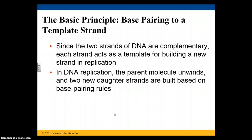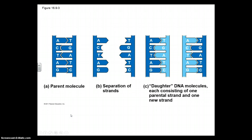Since the two strands of DNA are complementary, each strand can act as a template for building a new strand when the DNA is replicating. The parent molecule will unwind, and two new daughter strands are built based on the base pairing rules. The parent molecule separates at the hydrogen bonds, and then the nucleotides come in and bond with the corresponding bases. Each of the new strands will have a parental strand and a newly made daughter strand.